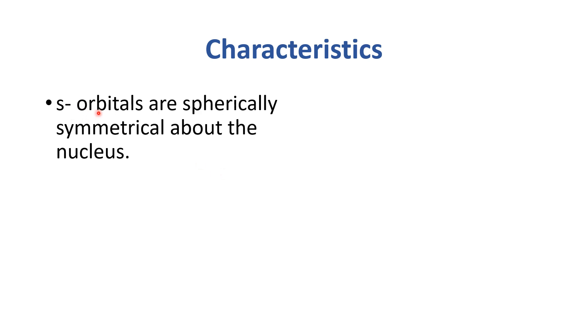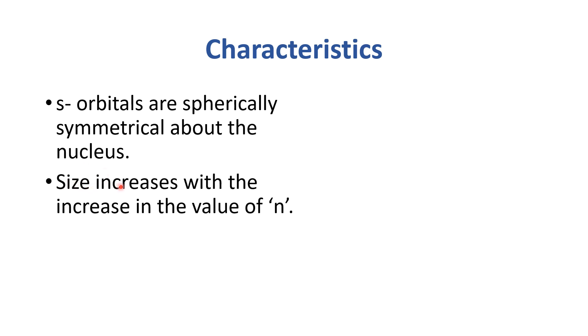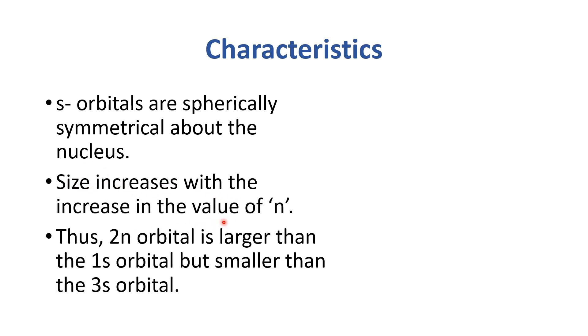Let's discuss the details of s orbitals. S orbitals are spherically symmetrical about the nucleus. The size increases with the increase in the value of n. Thus the 2s orbital is larger than the 1s orbital but smaller than the 3s orbital.